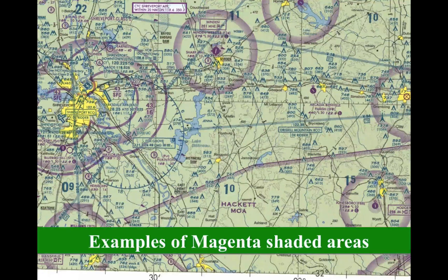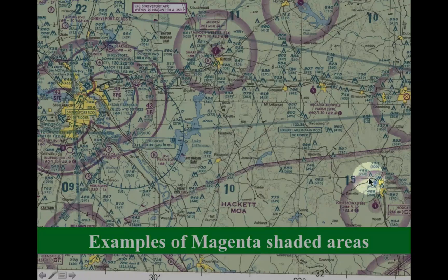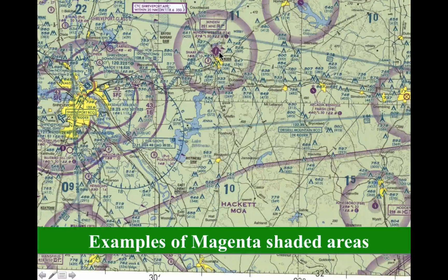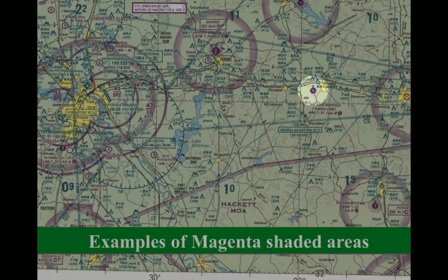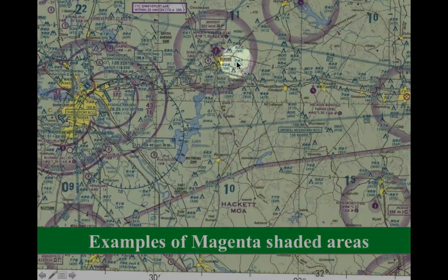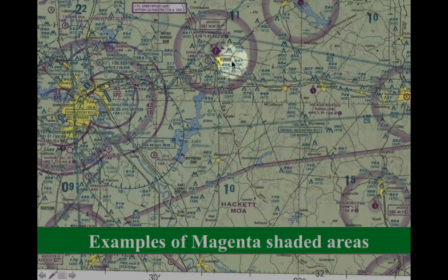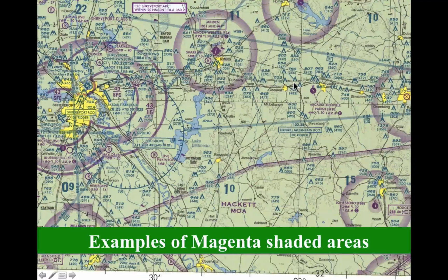Here are more examples of a sectional chart showing various airspaces — the 700-foot floors inside these magenta circles around non-towered airports. There is one airport out here not in that area. G exists both inside and outside the circles, and E exists both inside and outside. The difference is 700 feet inside or 1,200 feet outside — that's what you need to keep straight, and it's probably the most common mistake with E and G airspace.